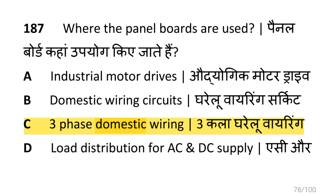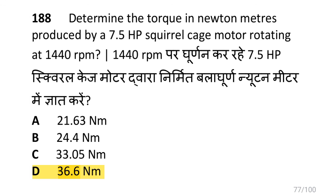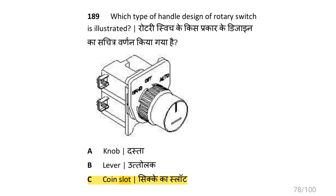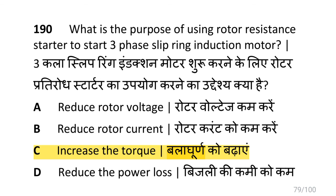Panel boards are used in three phase domestic wiring. The torque produced by a 7.5 HP squirrel cage motor rotating at 1440 RPM is 36.6 Nm. The handle design of the rotary switch illustrated is coin slot type. The purpose of using a rotor resistance starter to start a three phase slip ring induction motor is to increase the torque.